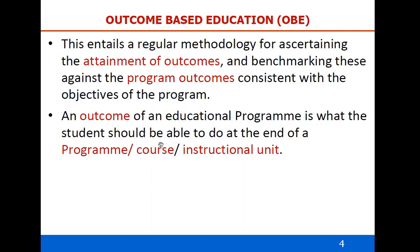A particular unit in a course — once its outcomes are achieved, then by taking the combination of all units' outcomes, the course outcomes are achieved. Then a particular course outcome is achieved by all the students of that course. Suppose first year to final year level, if all courses' outcomes are achieved at the end of the course, then automatically the program outcomes are achieved. Instructional unit is dependent on a particular course, and course outcomes are dependent on program outcomes.